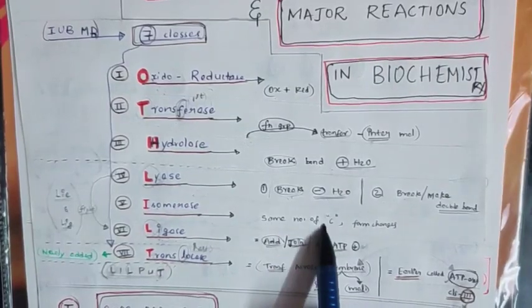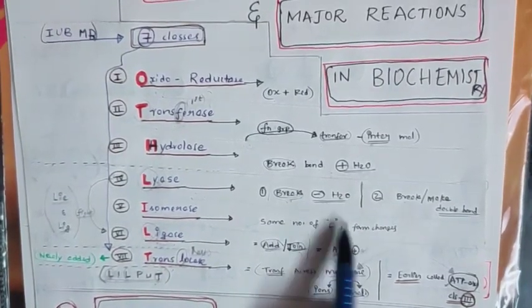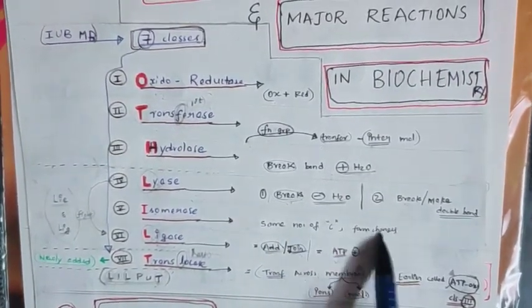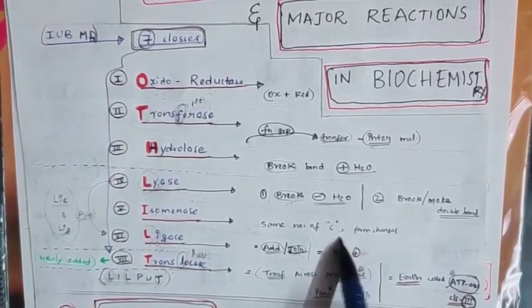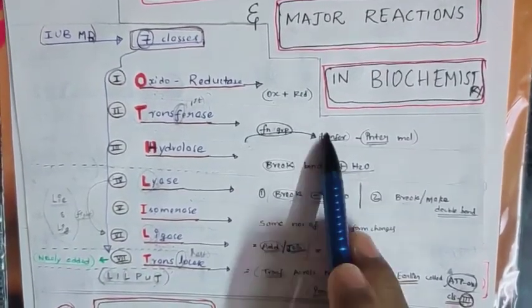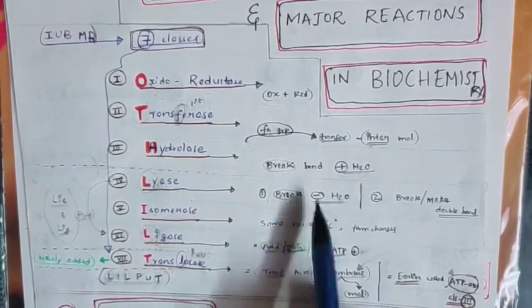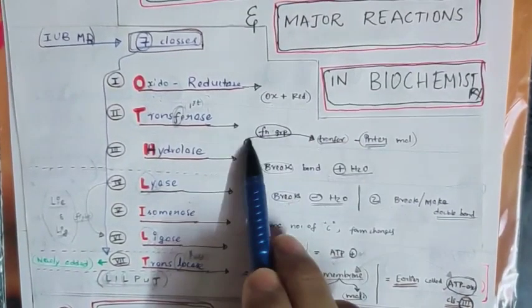Isomerase means same number of carbon atoms. There is no breaking or making of bonds, only the form changes by just some intramolecular transfer. So both Transferase and Isomerase involve transfer, but what is the difference? Intermolecular versus intramolecular.